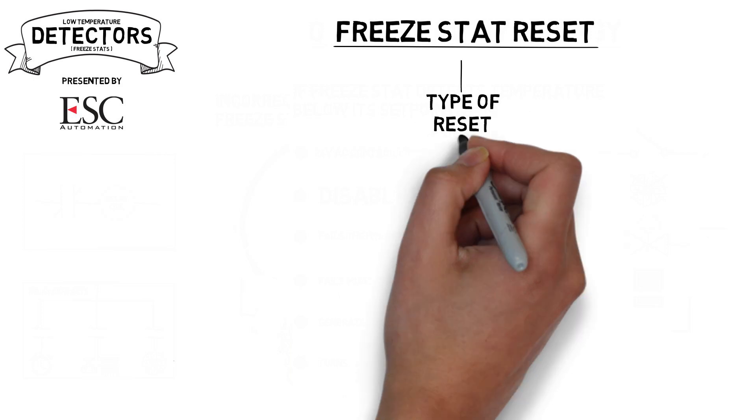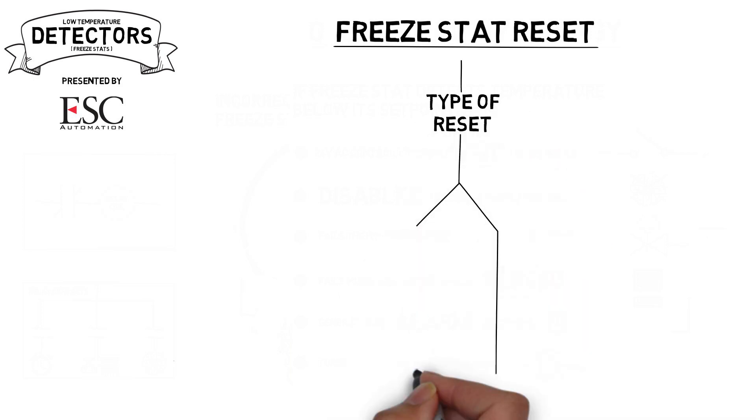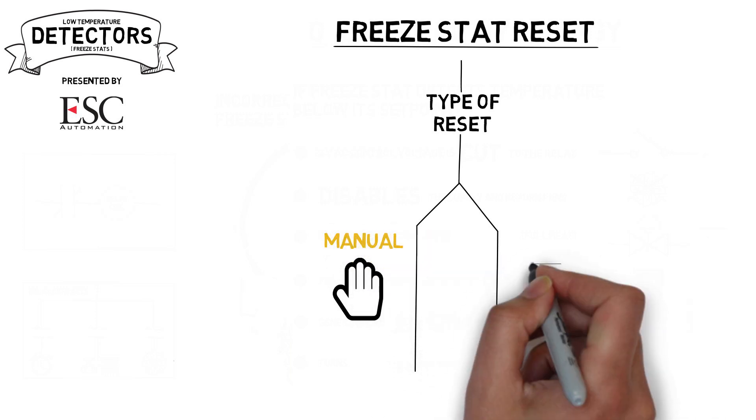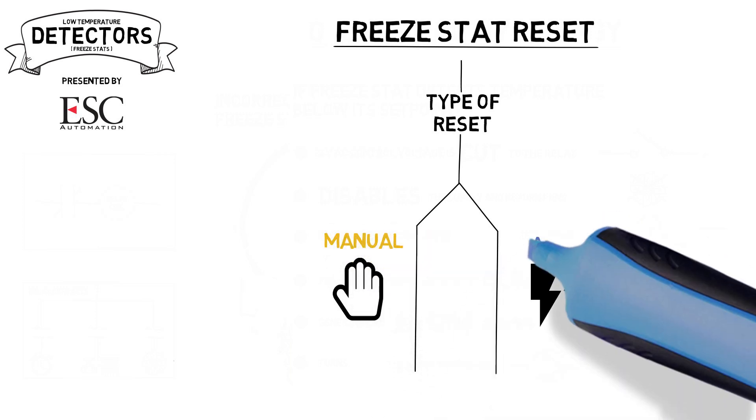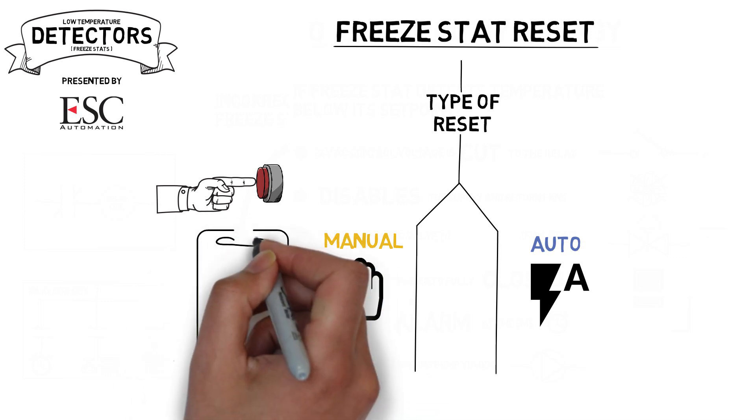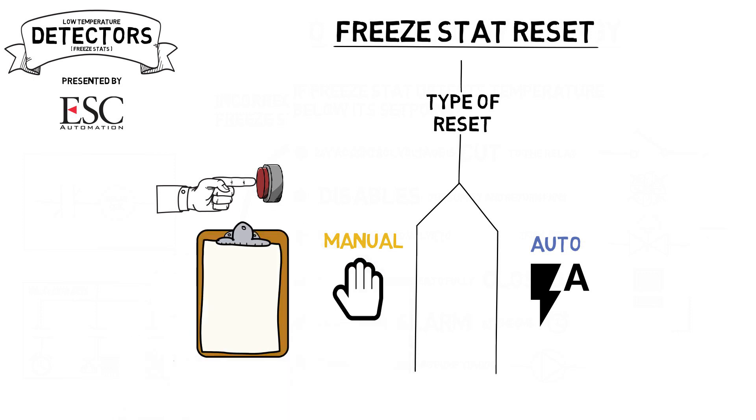Freeze stats can either have an auto or manual type reset. It is always advisable to select and install the manual reset type of freeze stat. However, there are instances when the auto reset type has its place. The manual reset is advised because it requires someone to go physically push a button on the stat in order to put the system back into normal operation. This helps to ensure that the cause of the low temperature condition is identified, corrected, and no longer exists before the unit is put back into service.